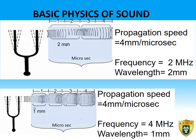Let's review these interrelationships again using an example that may be encountered in clinical practice. Many times it is not possible to alter the medium through which sound waves travel, so the propagation speed cannot be changed. However, we can change the wavelength of sound waves by changing the frequency of an ultrasound generator. In the two examples here, the propagation speed is constant. The lower frequency results in a longer wavelength, and the higher frequency results in a shorter wavelength.